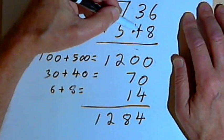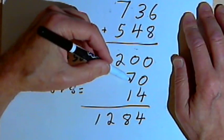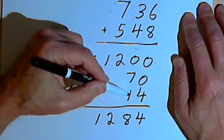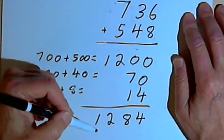Then I go to the tens. I add those tens together and get a 70. Then I go to the ones. I add those together and get a 14. And I add those three numbers together to get the answer.